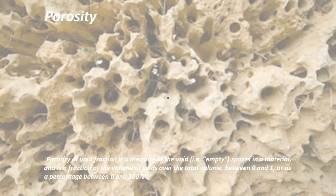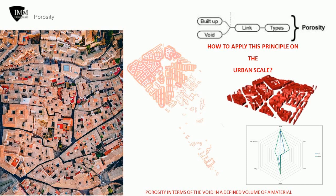Porosity, or void fraction, is a measure of the void spaces in a material, and is a fraction of the volume of voids over the total volume — between 0 and 1, or as a percentage between 0 and 100%. In IMM, porosity emerges by the combination and synergetic integration of volume, void, links, and type of uses. One can imagine the city as a solid porous volume, sponge-like, with various sizes of holes linked by a linear void layer, whereby the integration of urban volume and void forms porosities. In general, porosity is a measure of how much of a solid mass is open space, which can be between grains or within cavities.